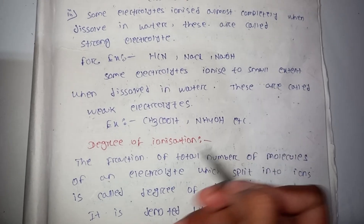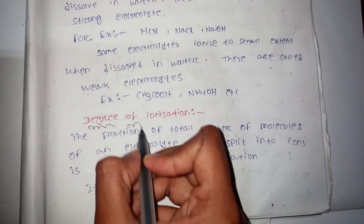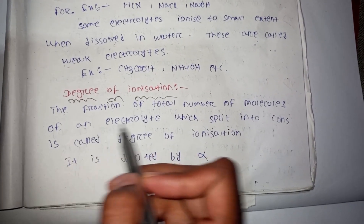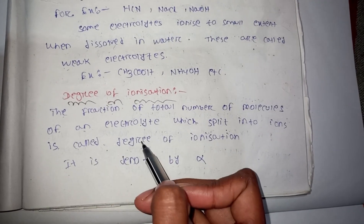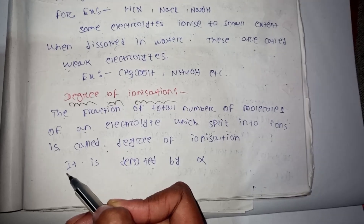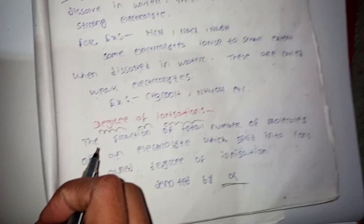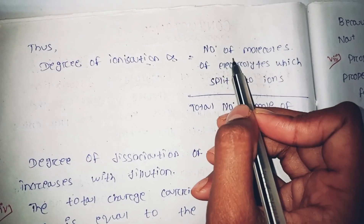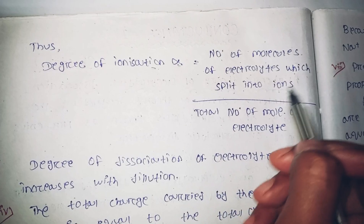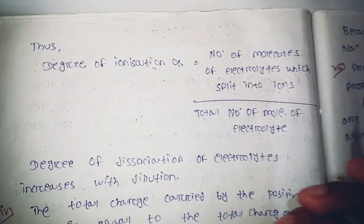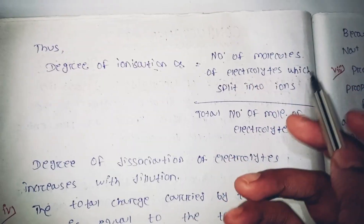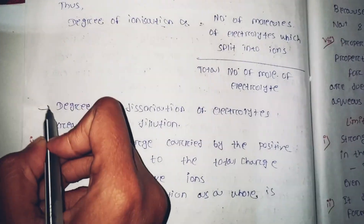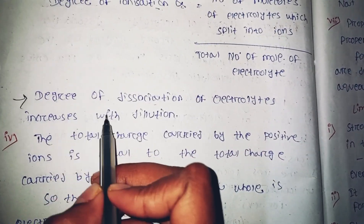The degree of ionization is the fraction of the total number of molecules of an electrolyte which is split into ions. It equals the number of molecules split into ions divided by the total number of molecules of electrolyte. The degree of dissociation of an electrolyte increases with dilution.